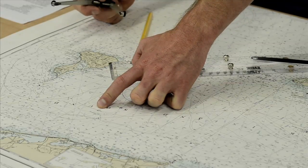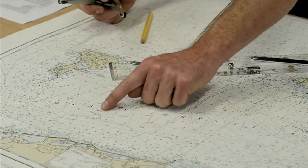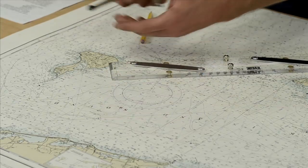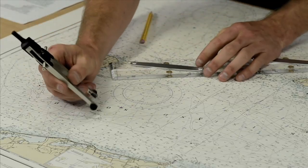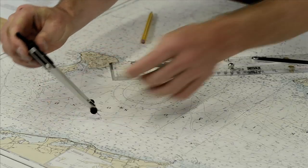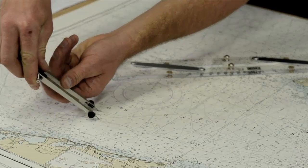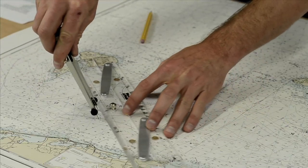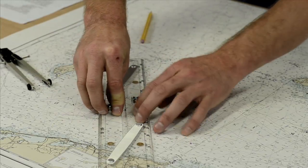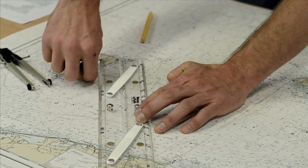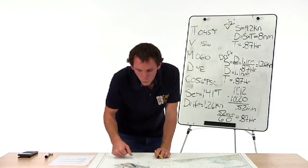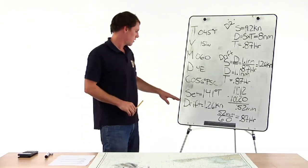Now we can calculate the set and drift of the current. The set is the direction the current pushed us; the drift is the speed we traveled in that direction. I bump my parallel rules up against my dividers and walk them down to the compass rose — from our DR position toward where we actually ended up. That gives us 141 degrees true — that was our set.